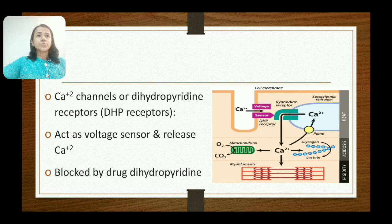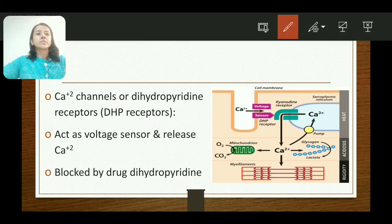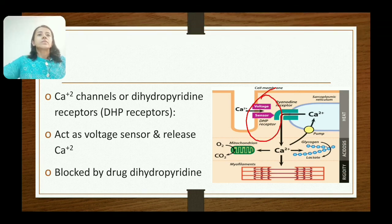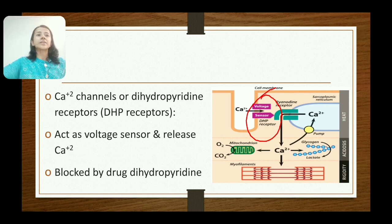The membrane of the T-tubules contains voltage-gated calcium channels known as dihydropyridine receptors, visible in the diagram. These receptors act as voltage sensors and release calcium ions. They are known as dihydropyridine receptors because they are blocked by the drug dihydropyridine.